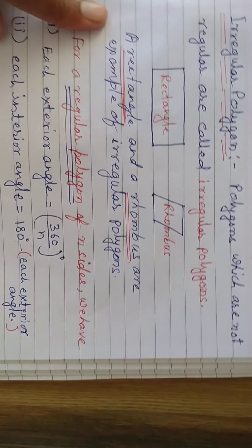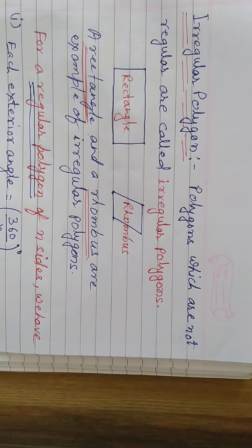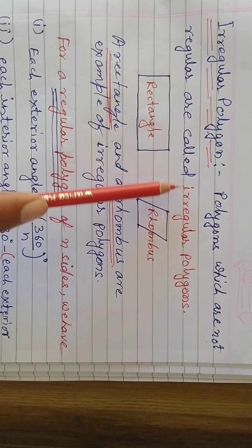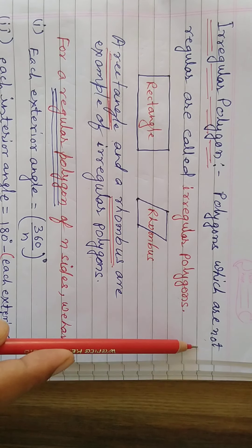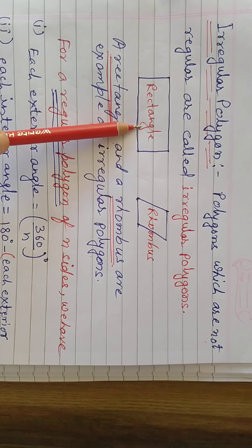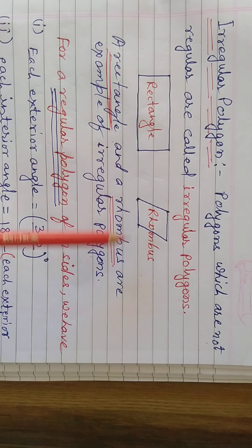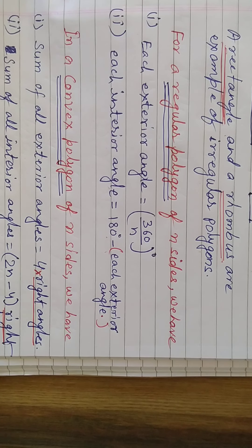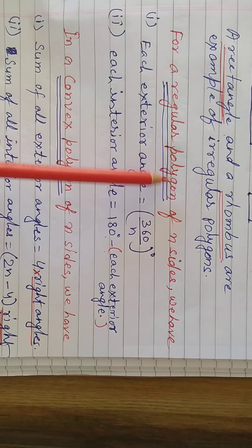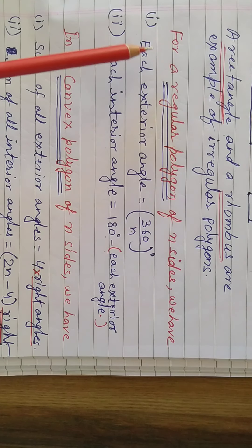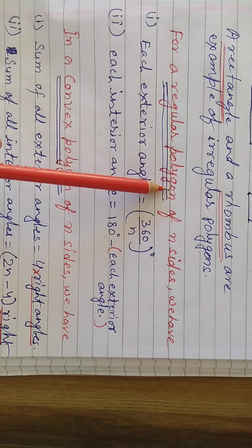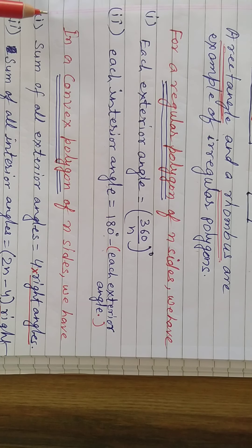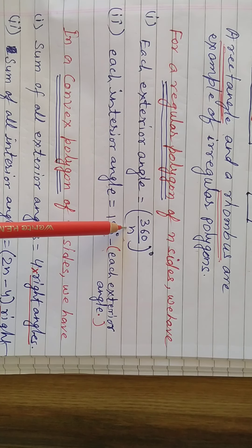Just opposite — irregular polygons. Polygons which are not regular are called irregular polygons. Rectangle and rhombus are examples of irregular polygons. Some formulas related to regular polygons.